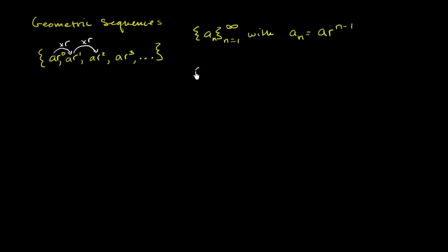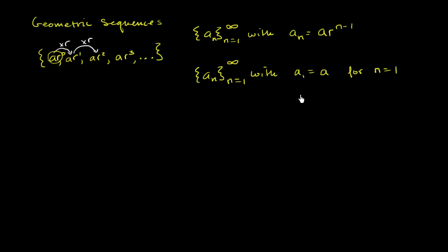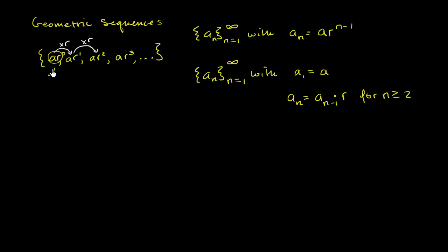We could also define it recursively. We say the sequence a_sub_n from n=1 to infinity, with a_sub_1 equal to a — that's the base case. And then a_sub_n equals the previous term, a_sub_(n-1), times r, for n greater than or equal to 2. So the first term is a, and each successive term is the previous term times r.